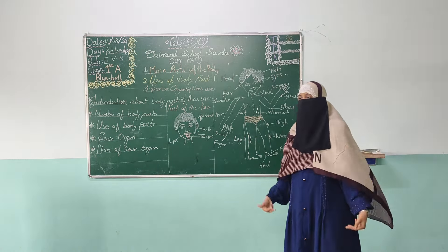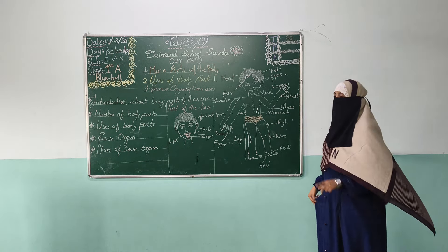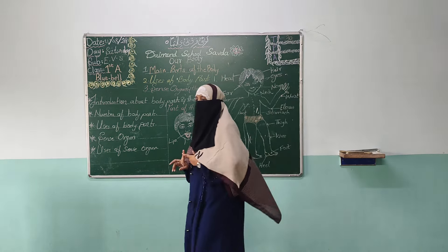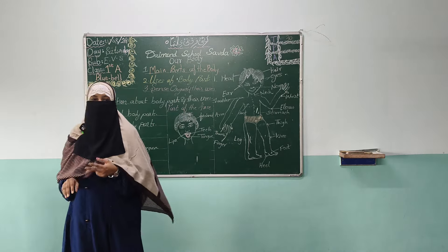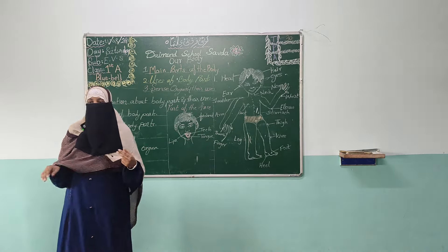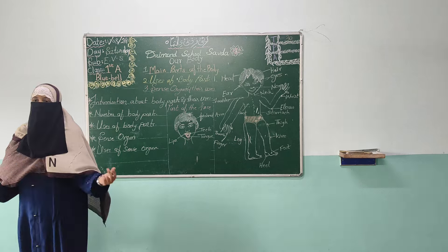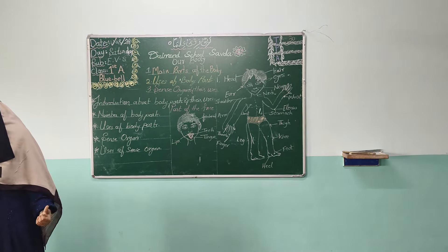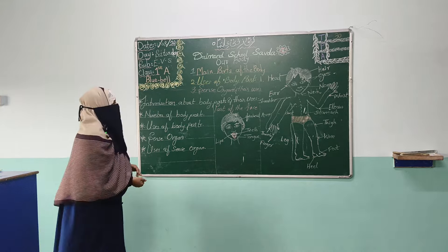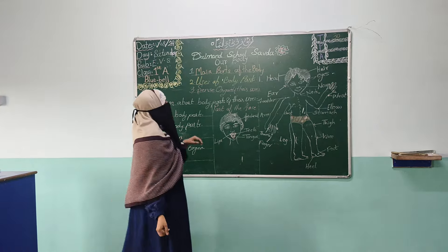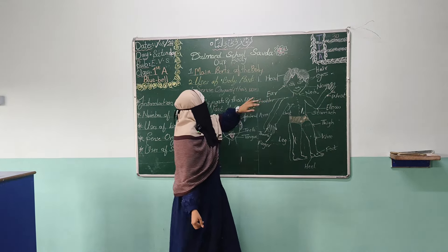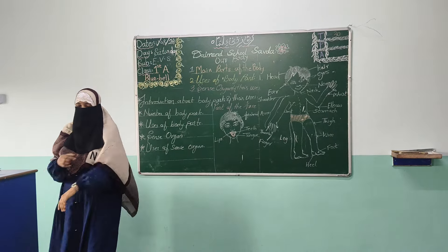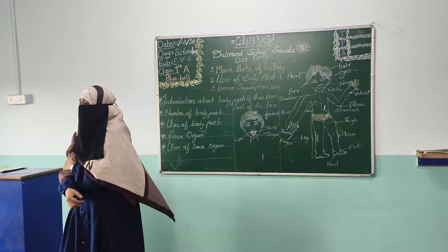These are the main parts of our body. Every person in your family — like your grandparents, your mother, your father, your brother, sister — all have these parts. Every person has them. These are the main parts. Now we learn about the uses of the parts. Every part of the body has its own use.